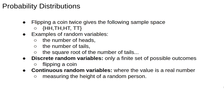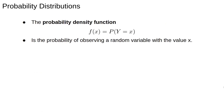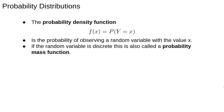Often we'll bin continuous data as in a histogram, and we'll mostly be thinking about discrete random variables. Now we introduce the idea of a probability density function, which is the probability that a random variable has the value x. If the random variable is discrete, this is also known as a probability mass function, though I'll usually call it a probability density function.